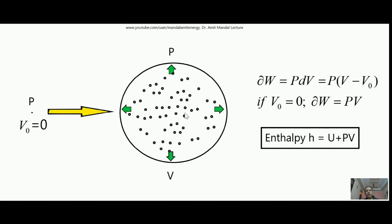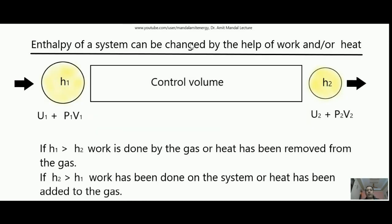There is also specific enthalpy, in which we take it as joule per kg — meaning per kg of gas, how much enthalpy is there. Now, enthalpy of a system can be changed by work and/or heat. Suppose this is some control volume in which some gas is entering with enthalpy H₁ = U₁ + p₁V₁, and it is coming out with enthalpy H₂ = U₂ + p₂V₂, where U is internal energy and pV is the associated work to make its own space.